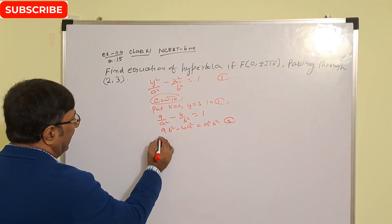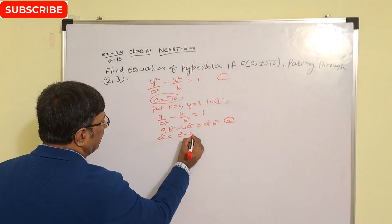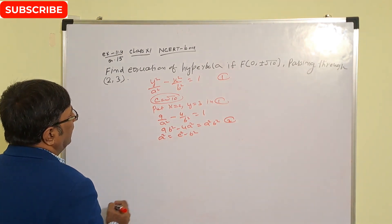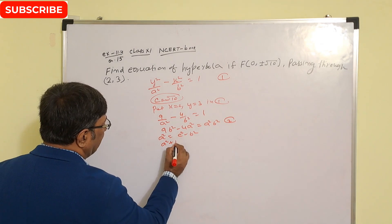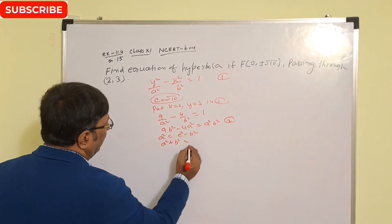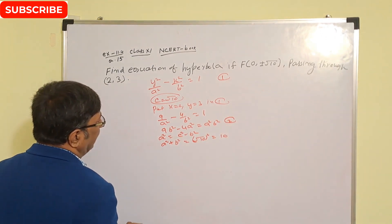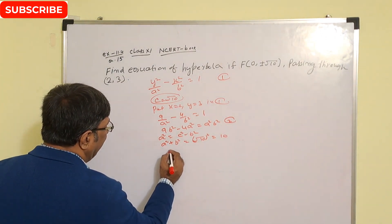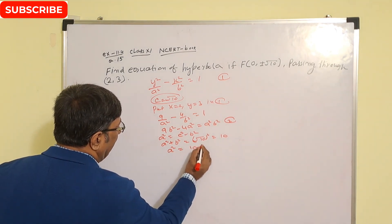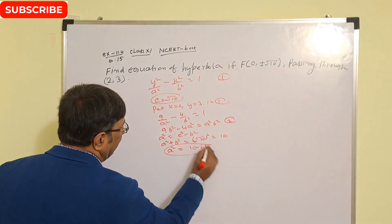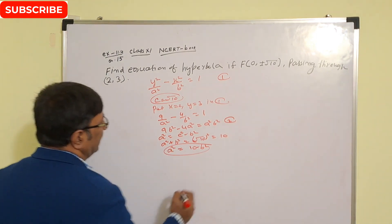We know the relation for a hyperbola with foci on the y-axis: c² = a² + b². So a² + b² = c² = (√10)² = 10. Therefore a² = 10 − b².